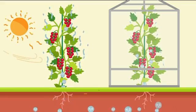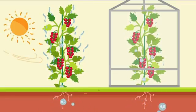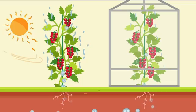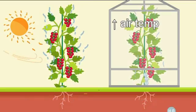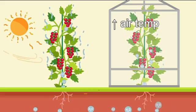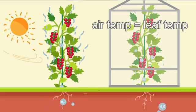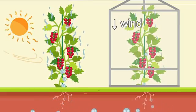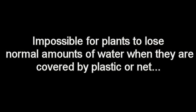When plants are grown in a protected environment, the amount of water that the plants lose will be significantly less than if the plants were exposed to the natural outdoors. This is due to the fact that the greenhouse or tunnel covering will cause the air temperature to increase, prevent the direct heating of the leaves — meaning that the leaf temperature will be similar to the air temperature — block the wind, and cause an increase in the humidity levels inside. This means that it is impossible for plants to lose normal amounts of water when they are covered by plastic or net compared to when they are exposed to the natural outdoors.